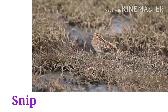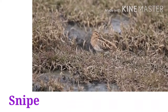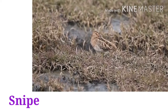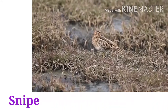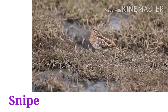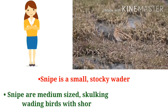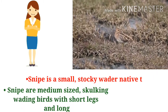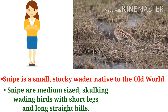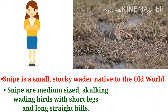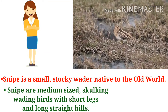Who is this? This is a snipe. S-N-I-P-E. Let's introduce the snipe. Snipe is a small, stocky wader native to the old world. Snipes are medium-sized wading birds with short legs and strong, straight bills.